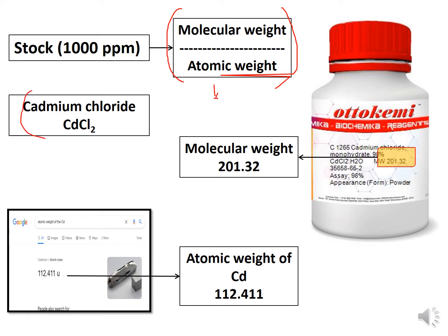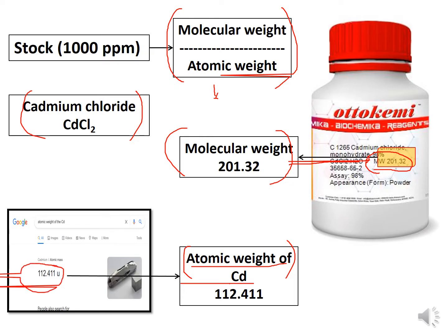In the case of cadmium chloride, the molecular weight of the compound can be seen on the reagent bottle — the molecular weight of cadmium chloride is 201.32. For the atomic weight of cadmium, we can find it in the periodic table of elements or simply Google it.